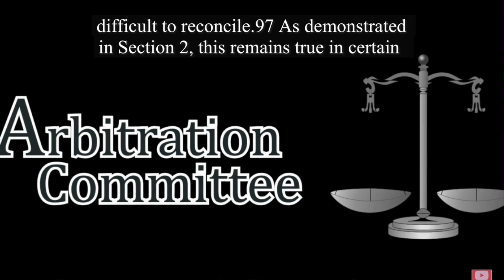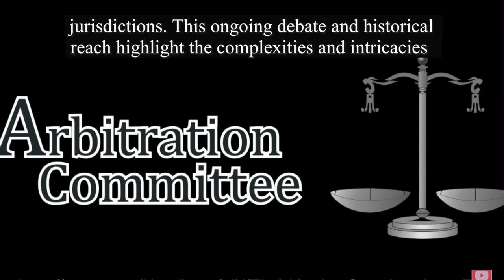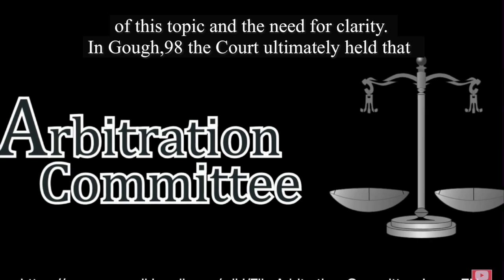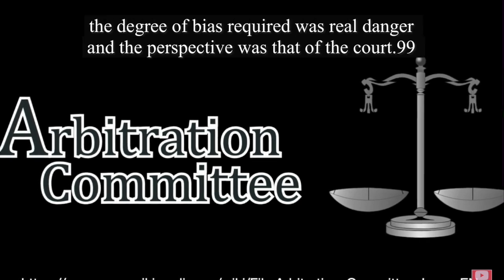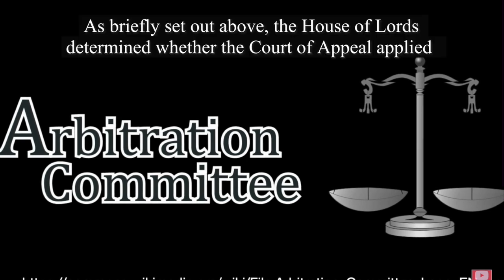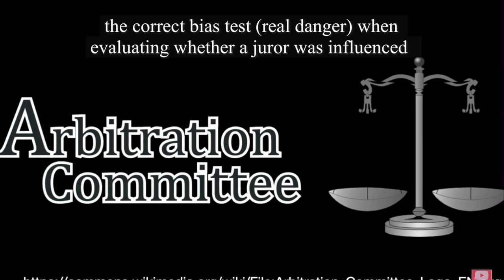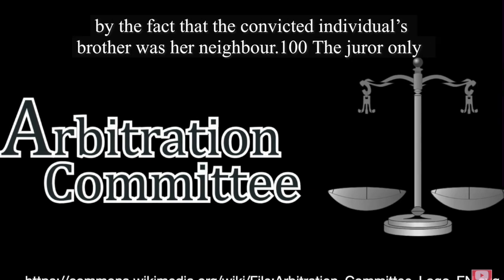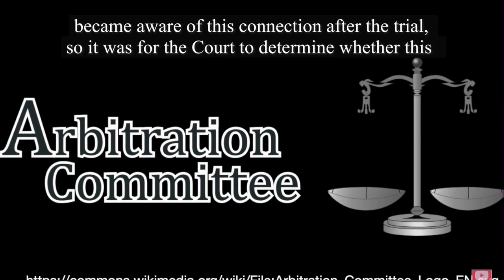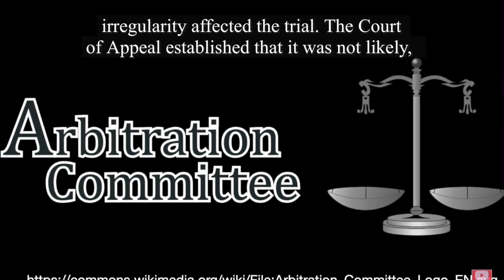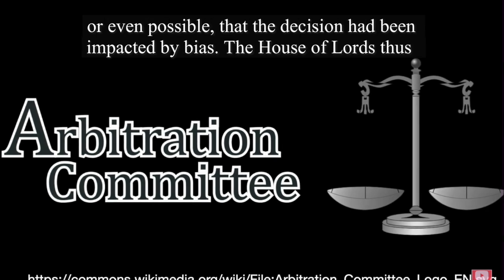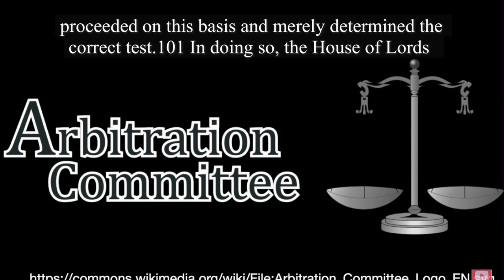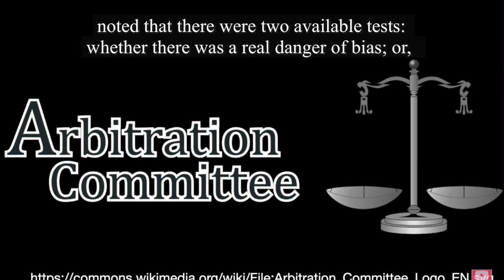The real danger test. Gough. Prior to Gough, it was said that the elements of apparent bias — degree and perspective — were difficult to reconcile. This ongoing debate and historical tension highlight the complexities and intricacies of this topic and the need for clarity. In Gough, the court ultimately held that the degree of bias required was real danger and the perspective was that of the court. As briefly set out above, the House of Lords determined whether the Court of Appeal applied the correct bias test — real danger — when evaluating whether a juror was influenced by the fact that the convicted individual's brother was her neighbour. The juror only became aware of this connection after the trial, so it was for the court to determine whether this irregularity affected the trial.